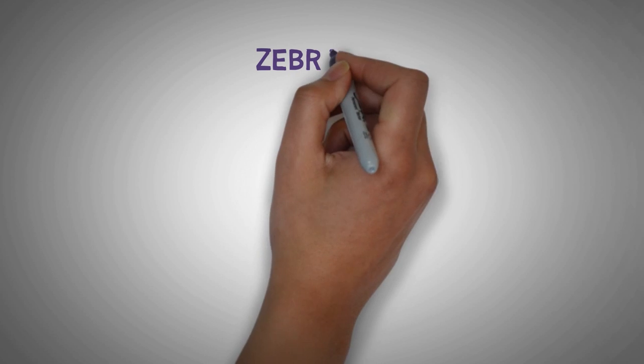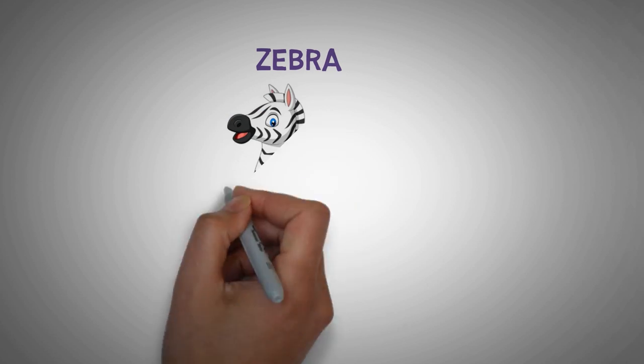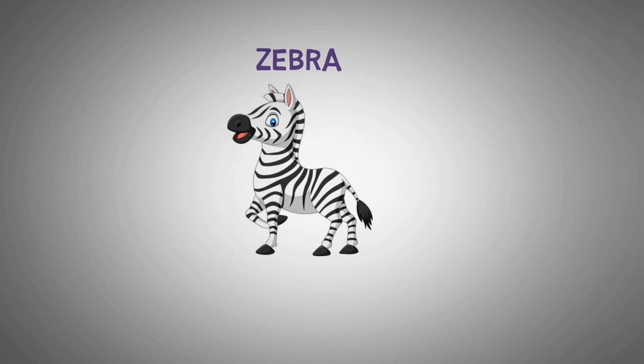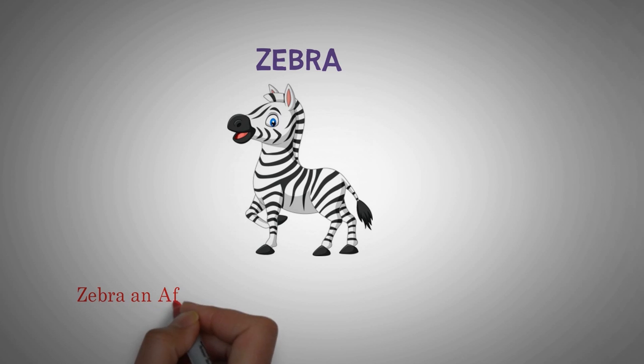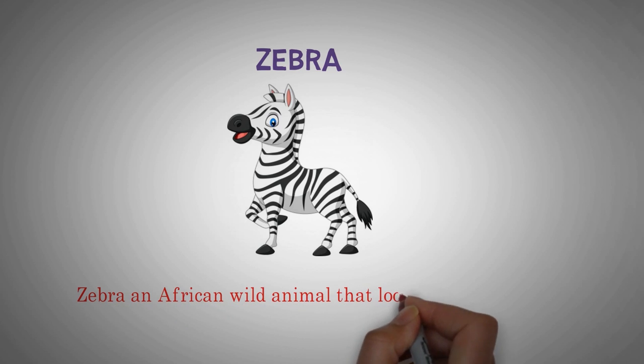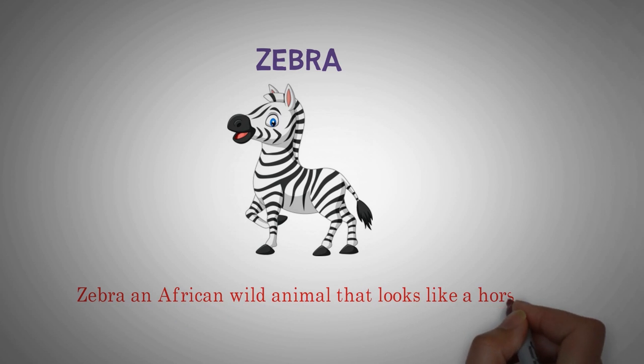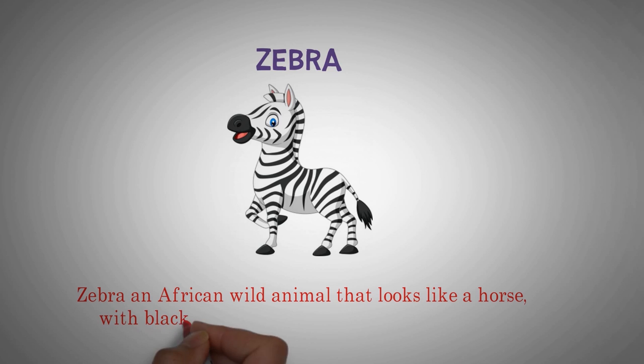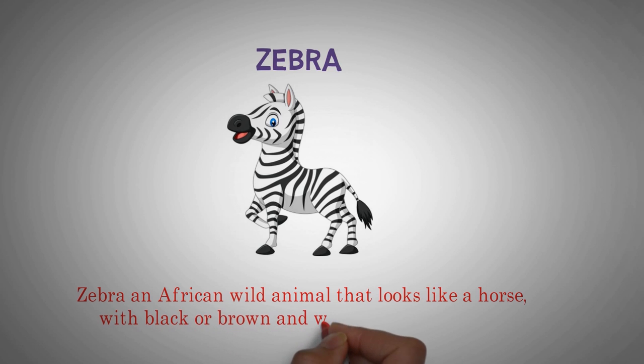Zebra. An African wild animal that looks like a horse, with black or brown and white lines on its body.